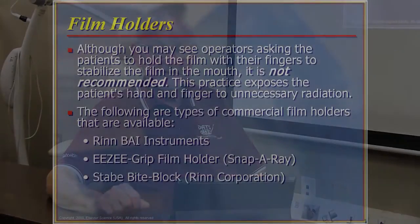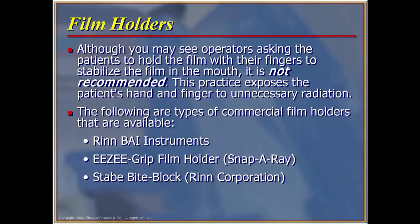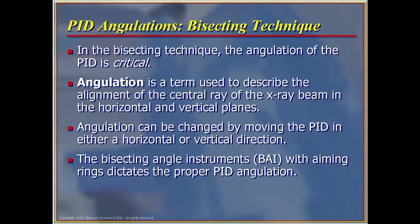Film holders must always be used. Using the patient's fingers, which was common practice up until the 1970s, is never recommended and is not accepted at this point. In the bisecting technique the angulation of the PID is critical. Angulation describes the alignment of the central ray of the x-ray beam in the horizontal and vertical planes, and can be changed by moving the PID in either a horizontal or vertical direction. The bisecting angle instruments with aiming rings dictate the proper PID alignment.